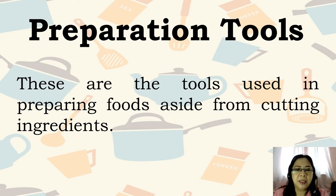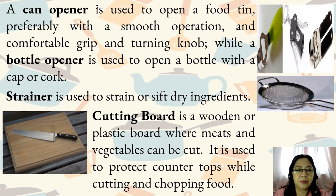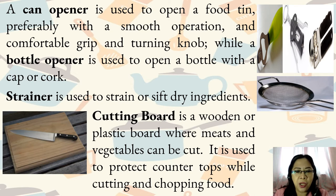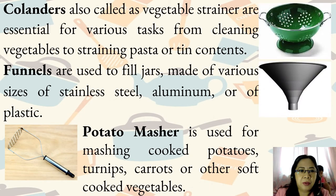Preparation tools are the tools used in preparing foods aside from cutting ingredients. A can opener is used to open a food tin, preferably with a smooth operation and comfortable grip and turning knob, while a bottle opener is used to open a bottle with a cap or cork. A strainer is used to strain or sift dry ingredients. Cutting board is a wooden or plastic board where meats and vegetables can be cut, used to protect countertops while cutting and chopping food. Colanders, also called vegetable strainers, are essential for various tasks from cleaning vegetables to straining pasta or tin contents.